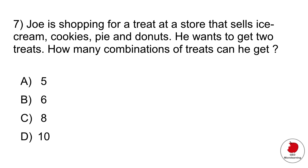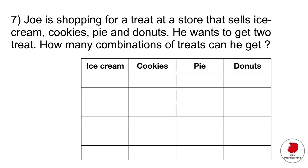This next problem is a combination problem. So sometimes they ask you combinations or permutations. Combinations is when they ask you to combine things and the order doesn't matter. And sometimes for combinations, the best thing to do is a table. The question says, Joe is shopping for a treat at a store that sells ice cream, cookies, pie, and donuts. He wants to get two treats. How many combinations of treats can he get? I find it to be the easiest at the end of the day, which is to do like a table like this and make just combinations like manually. So he could have ice cream and cookies, ice cream and pie, or ice cream and donuts. That's three combinations, or then he can have these other three combinations. If you count that out, that ends up being six possible combinations of treats that he can get. So it would be option B.